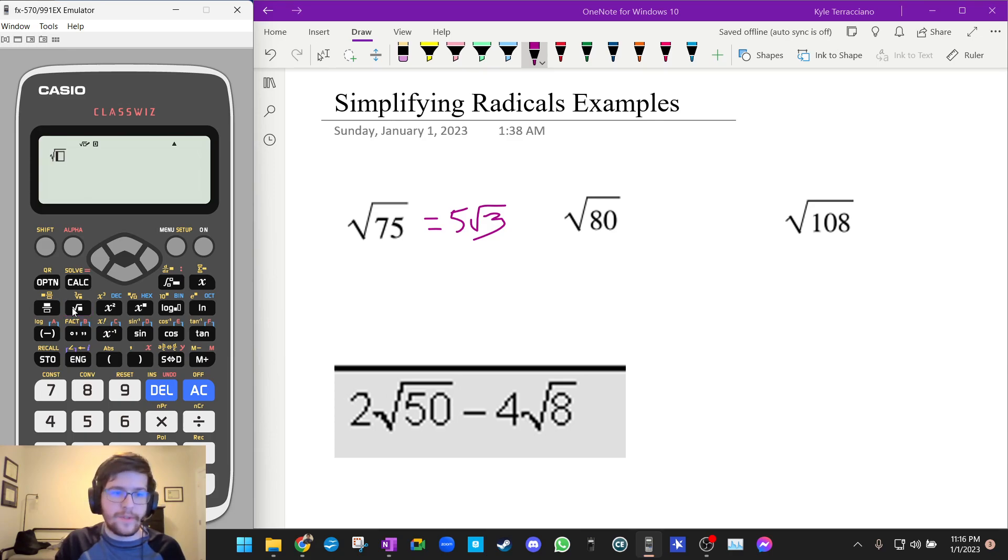So we'll do square root of 80, and that tells me 4 square root of 5. Let's try square root of 108, and we get 6 root 3.